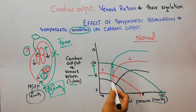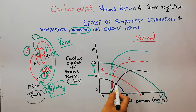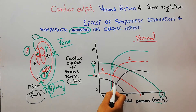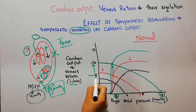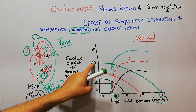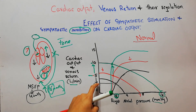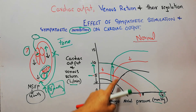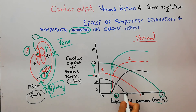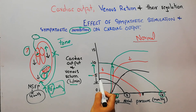The cardiac output and venous return curves now meet at a new, lower level. Both cardiac output and venous return fall below the normal level. The right atrial pressure only has to increase to 4 mmHg to bring down venous return to zero, because mean systemic filling pressure has fallen to 4 mmHg with sympathetic inhibition.